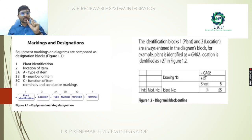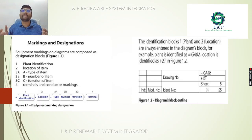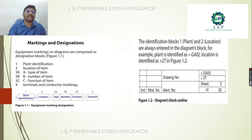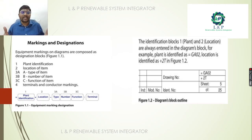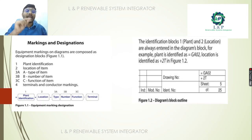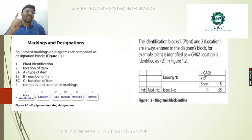Next is the type of item, and then the number — because the same type of item can have multiple instances present in a building. It doesn't mean only one pressure sensor or one temperature sensor is present; there is a possibility for multiple temperature sensors and multiple pressure sensors to be present in an industry or building. We need to differentiate them with numbering.